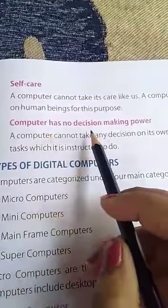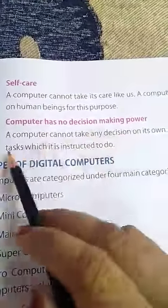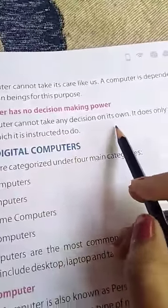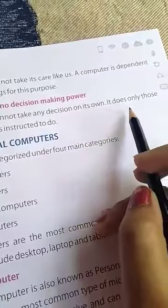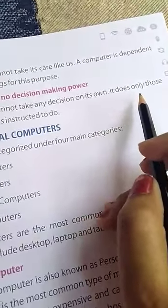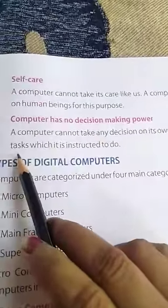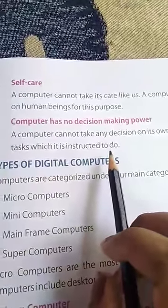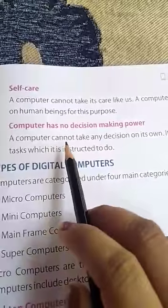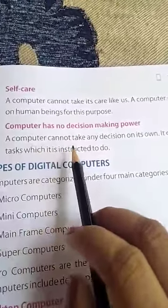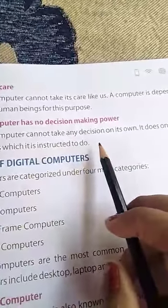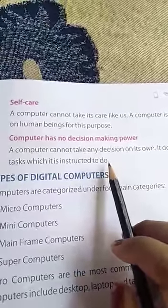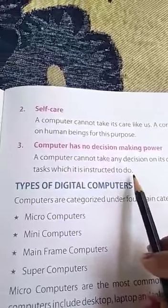Computer has no decision-making power. A computer cannot take any decision on its own. It does only those tasks which it is instructed to do. We have to give instructions to the computer.